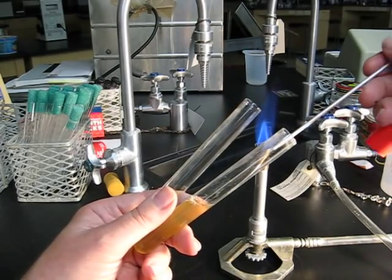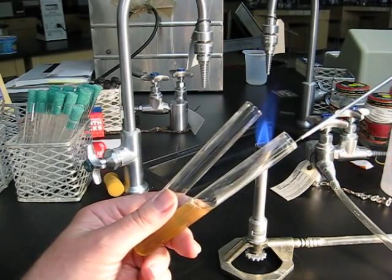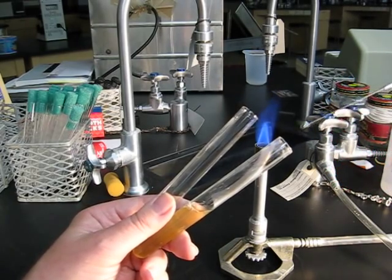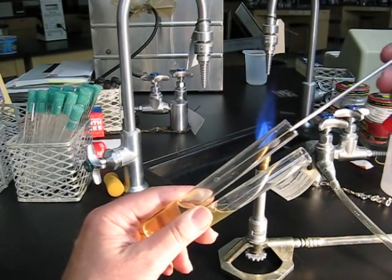Briefly flame the open ends of the tubes. Dip the sterile loop into the culture and transfer the inoculum to the broth tube, again by simply dipping the loop into the liquid.